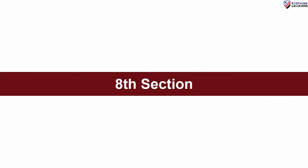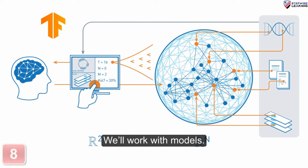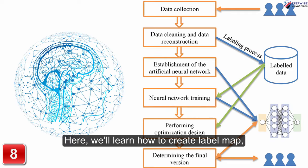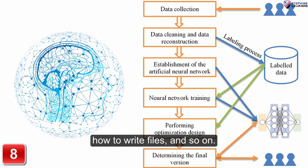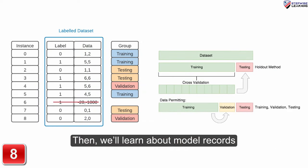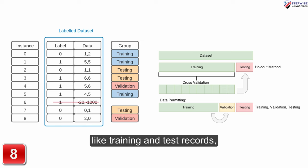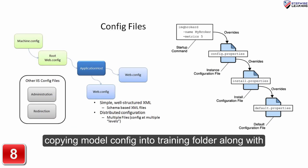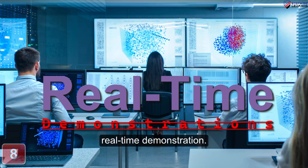After that, in the eighth section, we will work with models. Here, we will learn how to create a label map and how to write files. Then we will learn about model records like training and test records, copying model config into the training folder along with real-time demonstration.